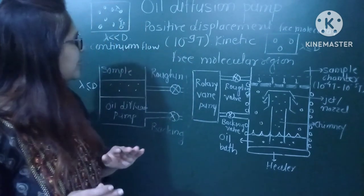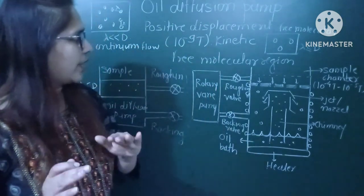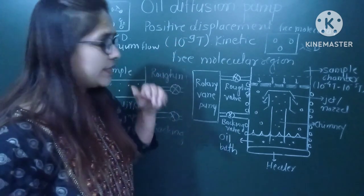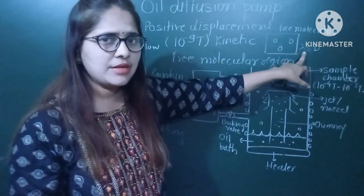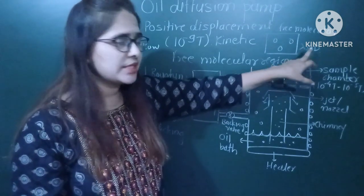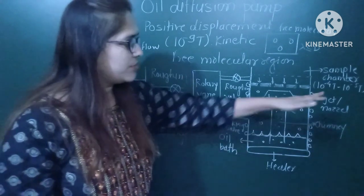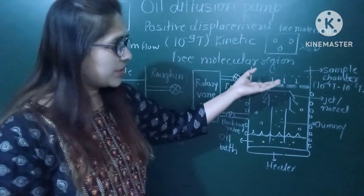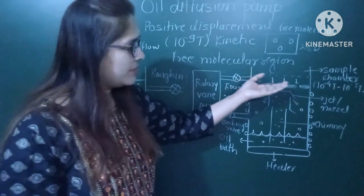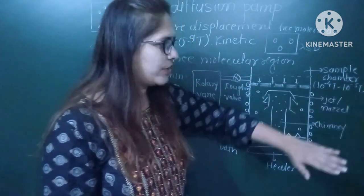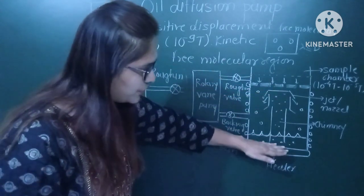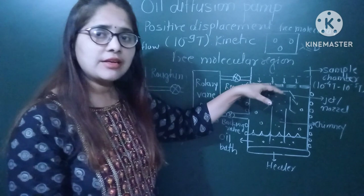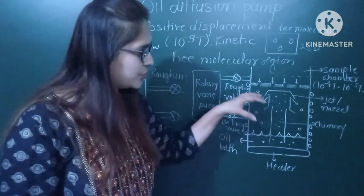Let me summarize this lecture. The oil diffusion pump can be used to attain a vacuum of nearly 10⁻⁹ torr. It works in a free molecular region where lambda is less than or equal to D, corresponding to a pressure of around 10⁻⁴ to 10⁻⁵ torr. In the sample chamber, we first generate this vacuum using the rotary vane pump. Then the oil molecules are heated, gain kinetic energy, and while coming out of the nozzle they impart kinetic energy to the air molecules.